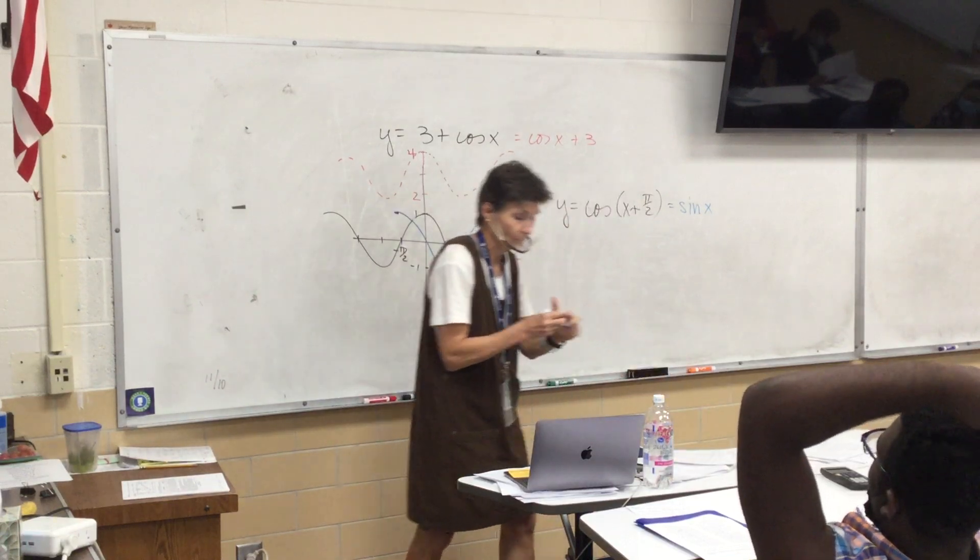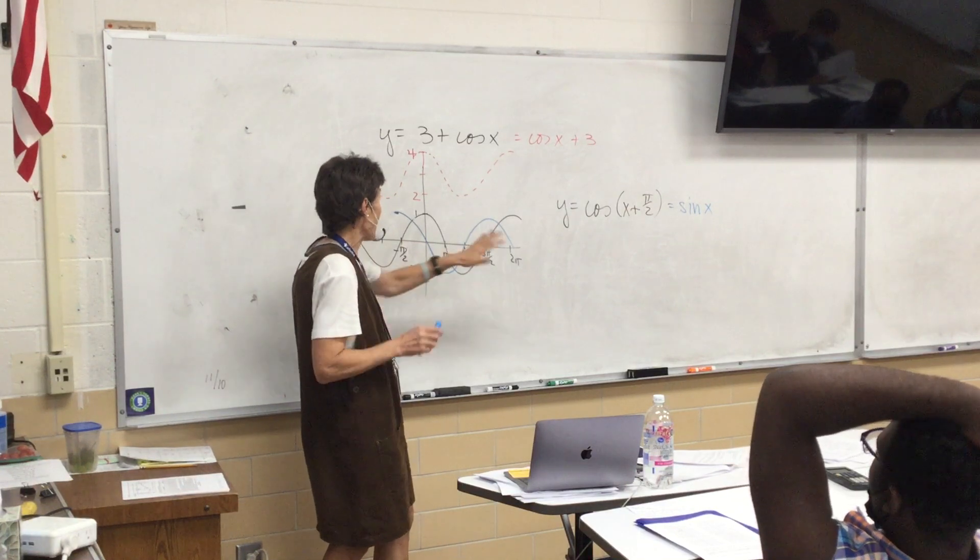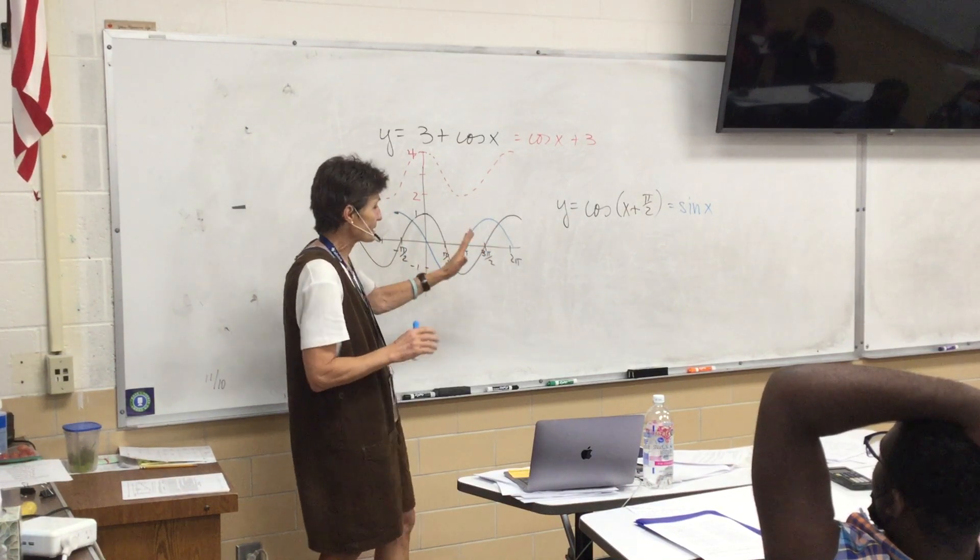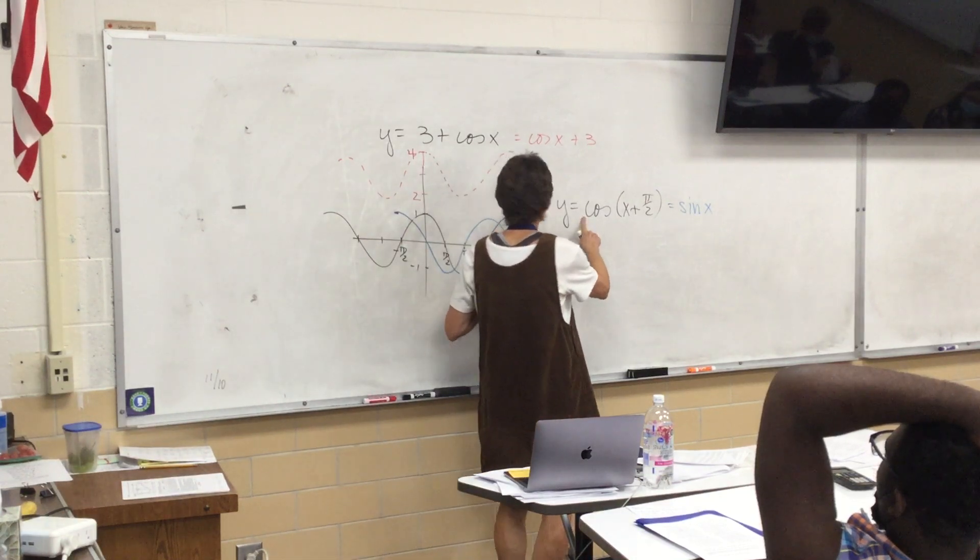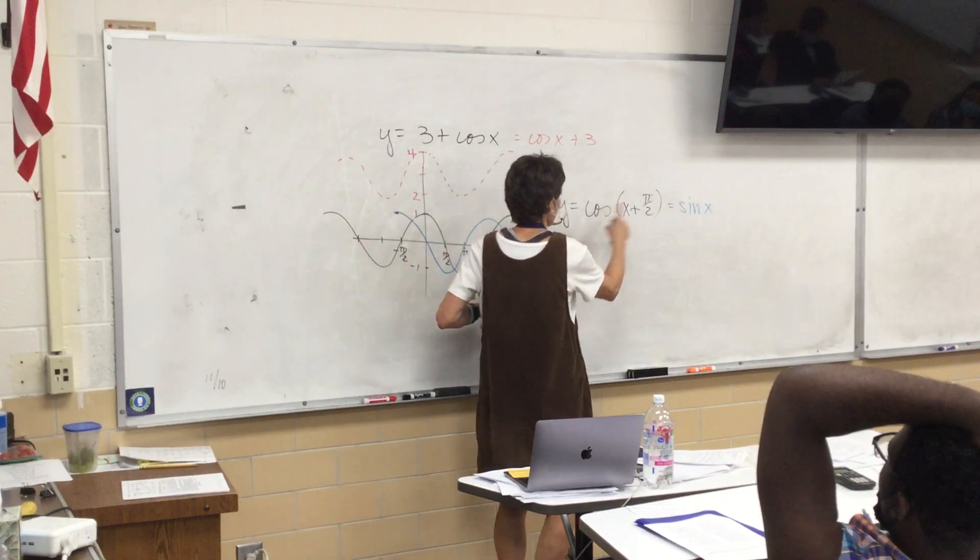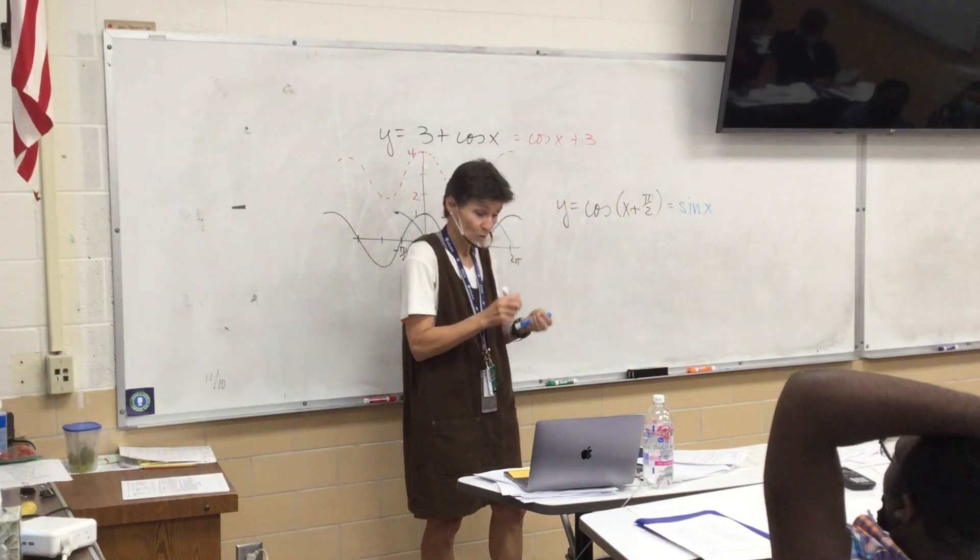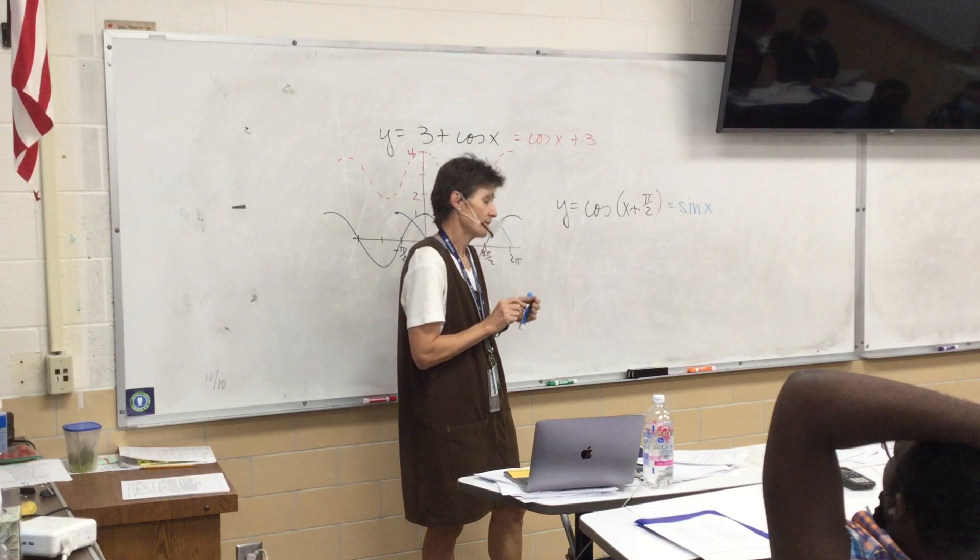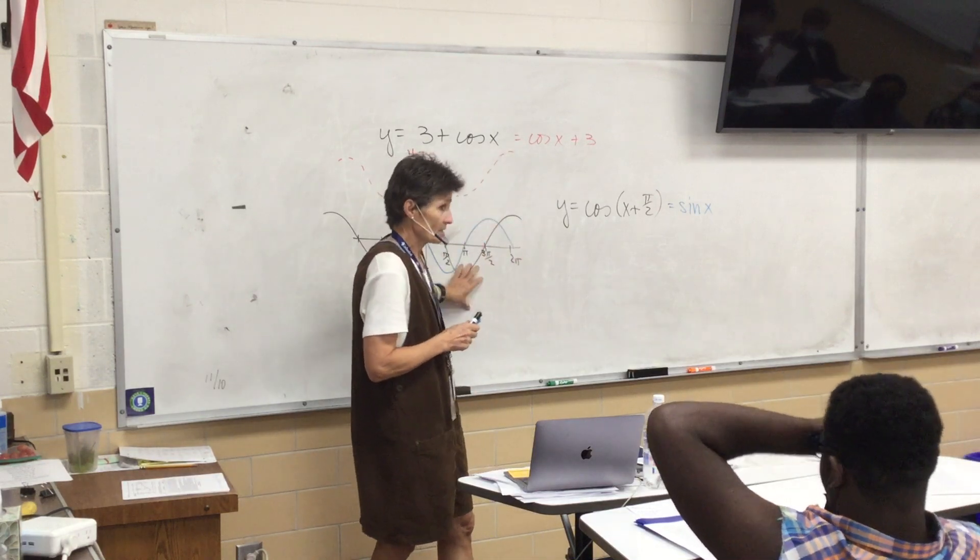Well, because I was, like, wondering, like, if you, like, stretched it so much, like, it'll become, like, a line, you know? Oh, I see. I haven't stretched and shrunk. I have translated. I can put a coefficient here to make the waves taller, and I can put a coefficient here to change the width of that. Oh, right. Just like regular. We'll do a ton of that in Chapter 4. Oh, really? Anything else about this picture?